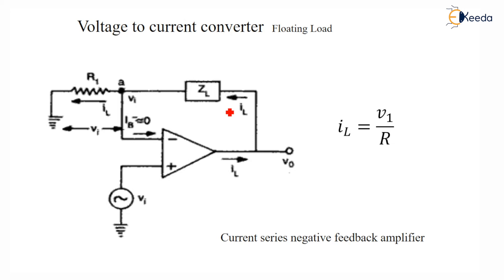This RL load is connected in the place of feedback resistor. That's why this circuit is also called as current series negative feedback amplifier. It is also called current series negative feedback amplifier.